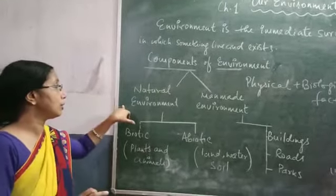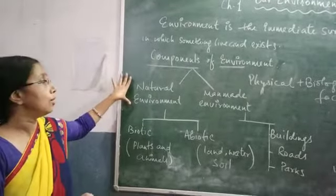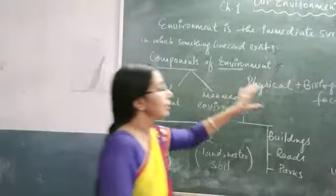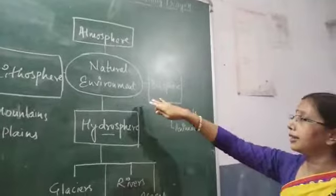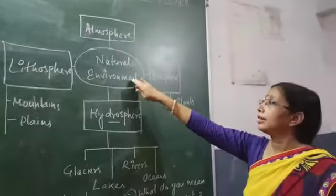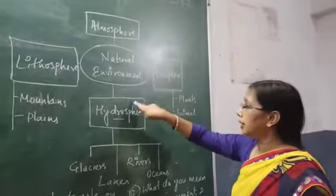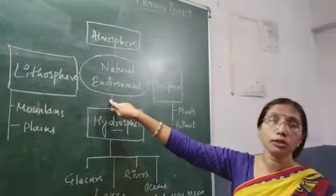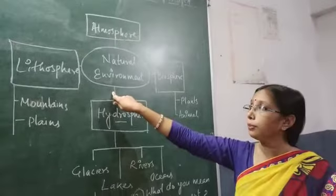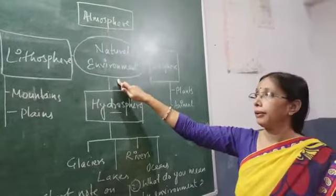In this video, I am learning about the natural environment. I have made a flow chart. The natural environment has 4 components. These are the 4 components of the earth which are elements of the natural environment.